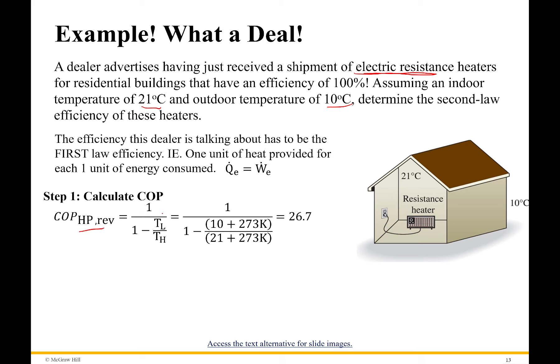Let's calculate the coefficient of performance for a Carnot heat pump. That's simply one over one minus the low temperature divided by the high temperature. Make sure you put those in absolute units, otherwise everything goes wrong. I get a coefficient of performance of 26.7.